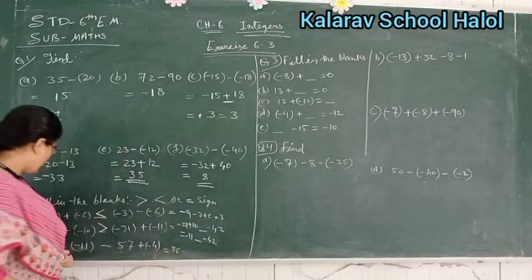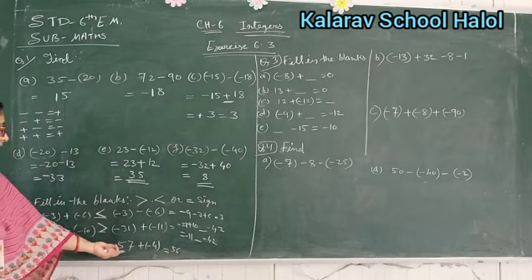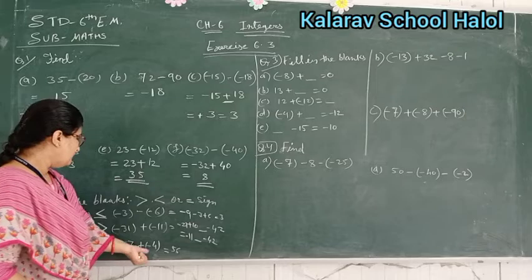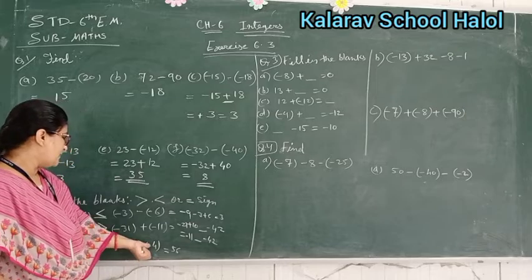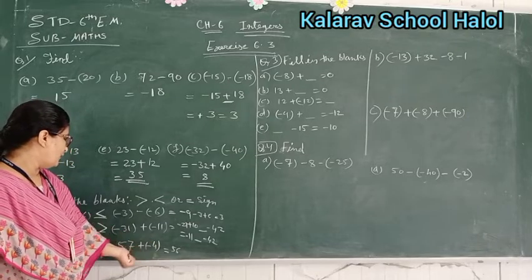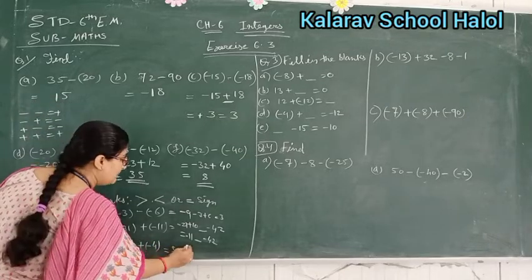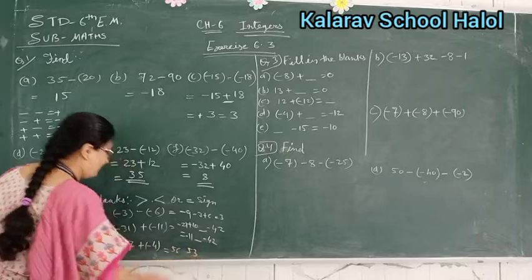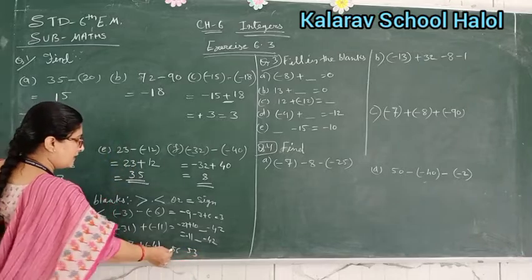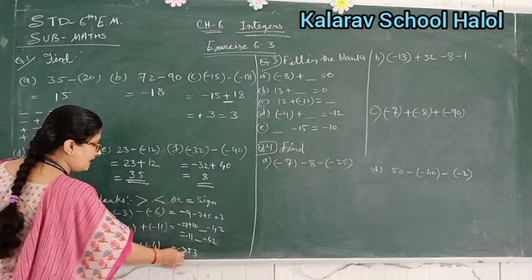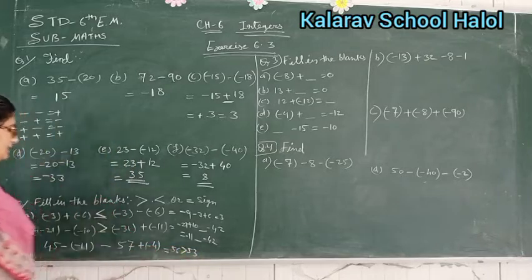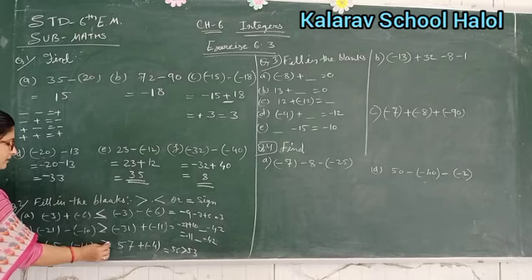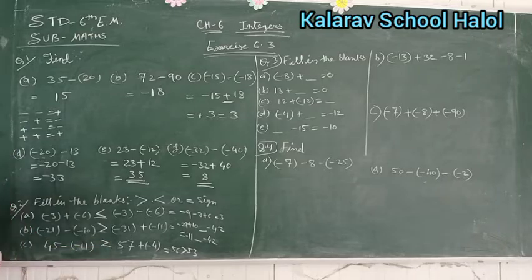Then here 57 plus minus minus 4, so 57 minus 4 = 53. In this result, 56 vs 53 — the bigger number gets the appropriate sign, so we place the correct comparison sign here.